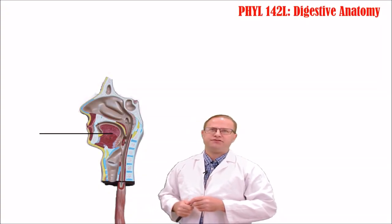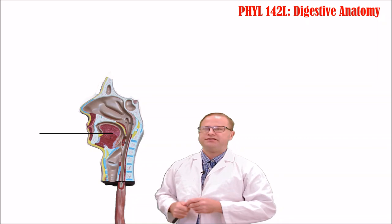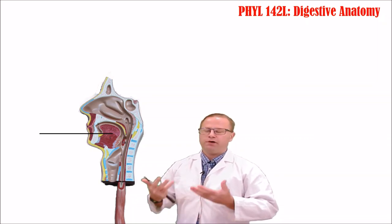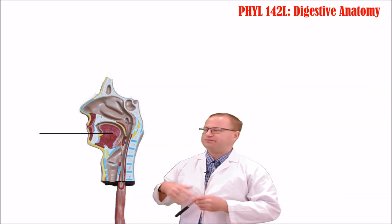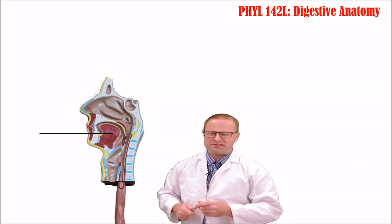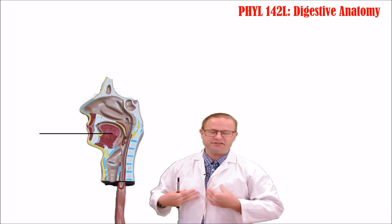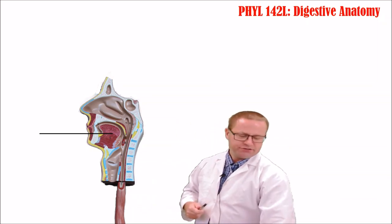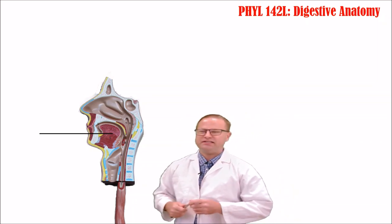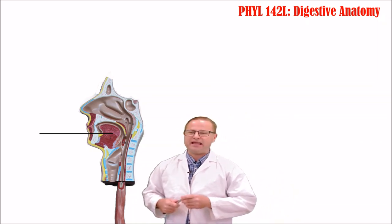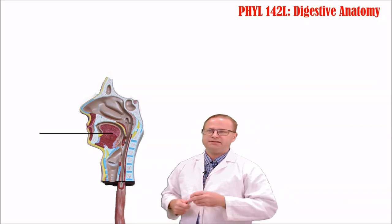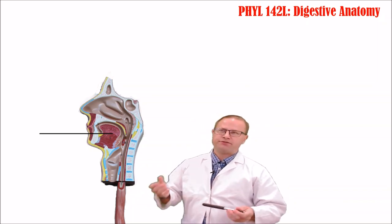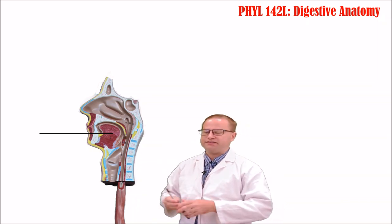Hello, this is Dr. Langston back with the third module of the Digestive Anatomy Lab — digestive processes. Turn to page 169 in your lab manual, and there should be Table 9.2, which talks about the processes and secretions of different digestive organs. We're going to talk about both the secretions and the processes at the same time.